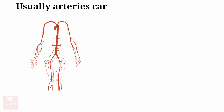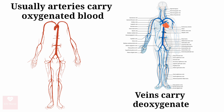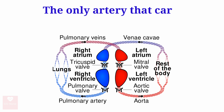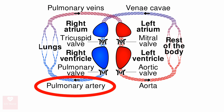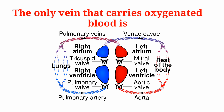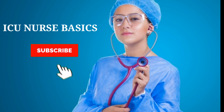Usually arteries carry oxygenated blood whereas veins carry deoxygenated blood. But the only artery that carries deoxygenated blood is the pulmonary artery. And the only vein that carries oxygenated blood is the pulmonary veins. Bye!